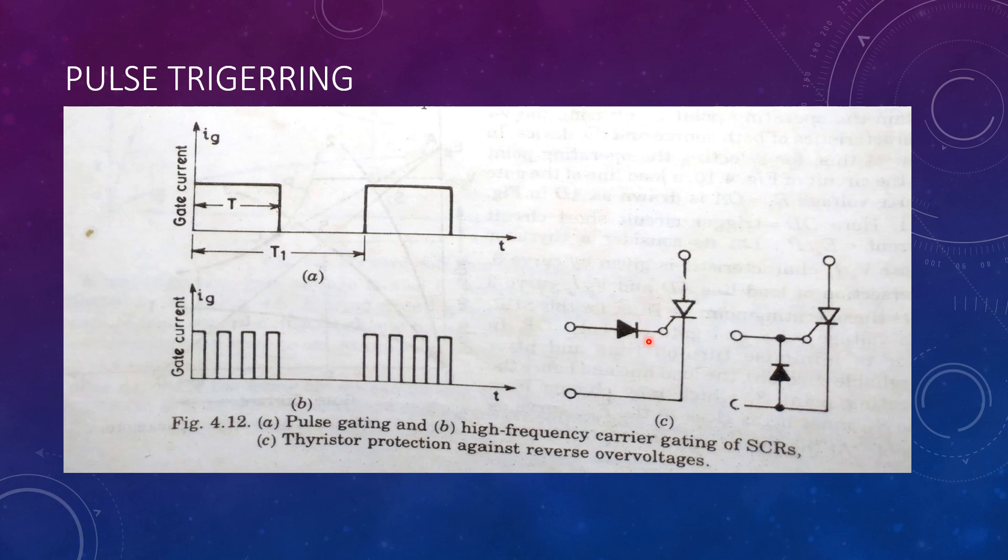To avoid this, a diode is connected in series with the gate circuit or in parallel across the gate cathode junction.